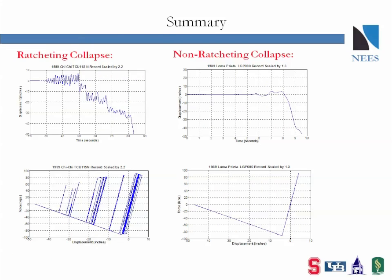Ratcheting behavior can be distinguished from non-ratcheting behavior by examining the displacement time history and force-displacement hysteresis. It is interesting that certain ground motions can lead to one type of response and not the other. Most notably, large pulse earthquakes may cause non-ratcheting collapse. Structure type and ductility will also contribute to the collapse response during an earthquake, as demonstrated with the E-Defense shake table test of the non-ductile reinforced concrete structure.